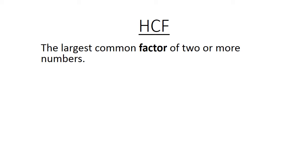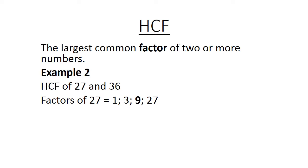The largest common factor of 2 or more numbers. Example 2. Highest common factor of 27 and 36. The factors of 27 are 1, 3, 9 and 27.